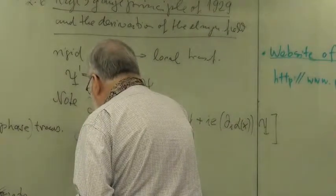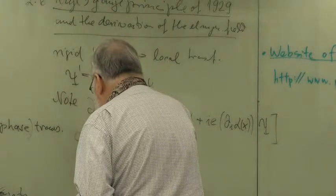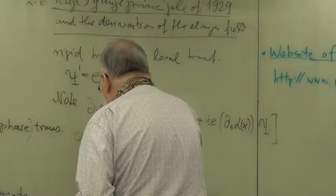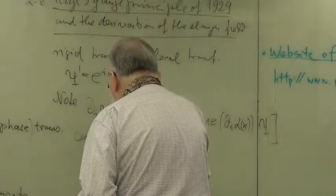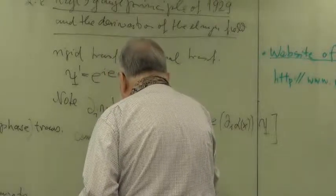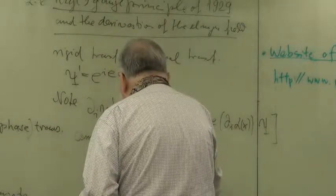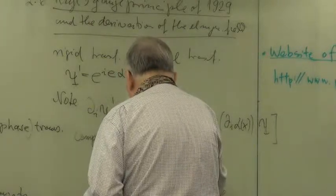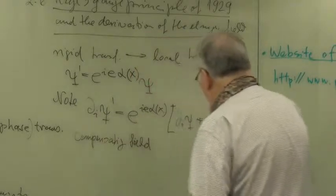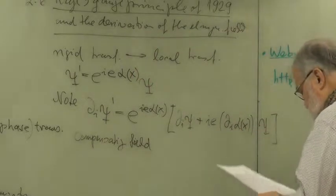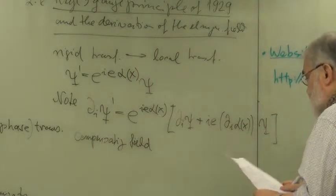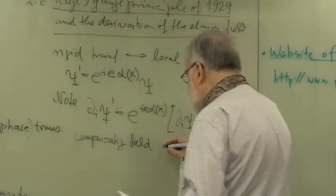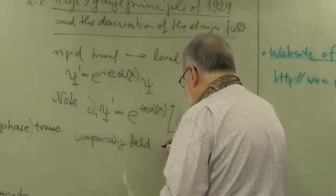Because we cannot fix the constant over all of space time, it has to be local information. So, these are heuristic arguments. Now, we see that, of course, the derivative of this psi dash, partial i, is no longer invariant. So this is equal, it picks up an additional term, which you can easily compute by differentiation, up to first order, i e partial derivative i of alpha times psi. And now the idea was, we are looking for a field which compensates this violation of gauge invariance.